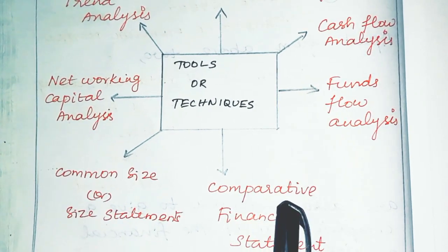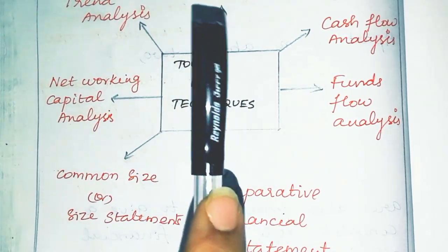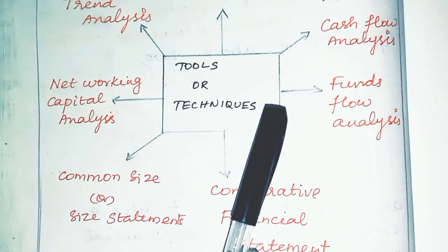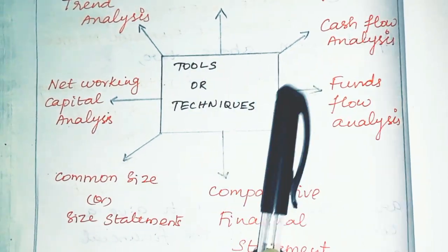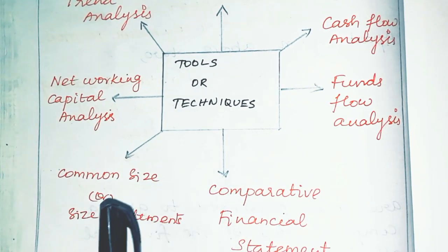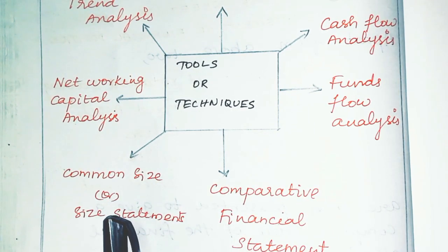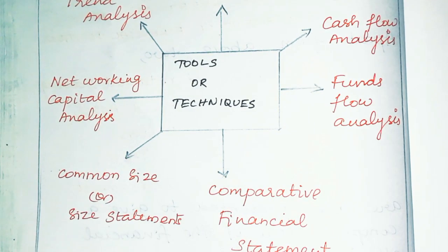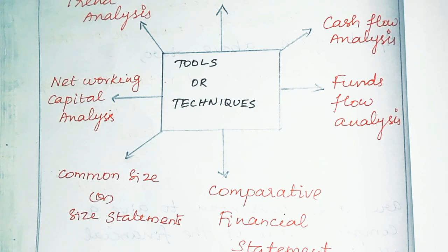In vertical analysis, we take one data and another data, compare them, and calculate the change percentage. In the common size statement, if you have a profit and loss account — that is, the income statement — or a balance sheet with a total value, we will compare and analyze them.